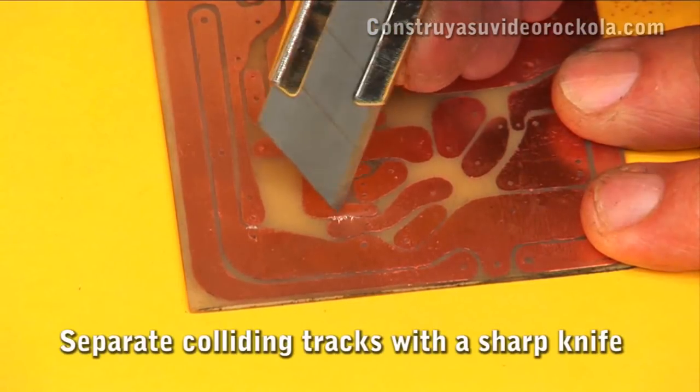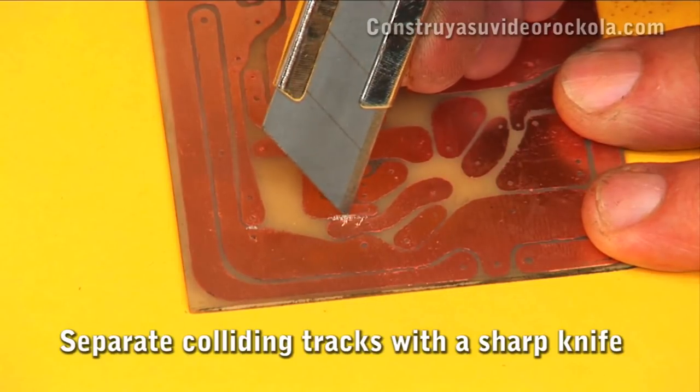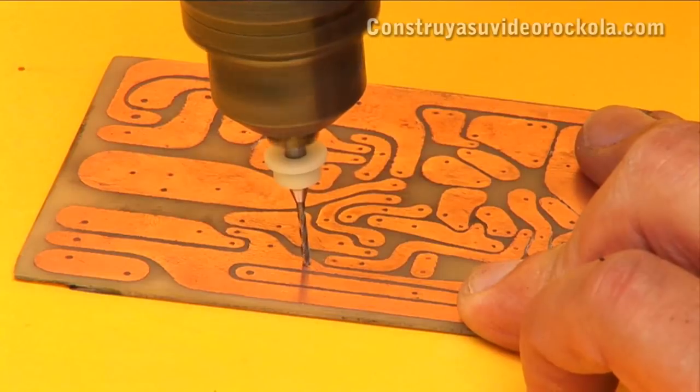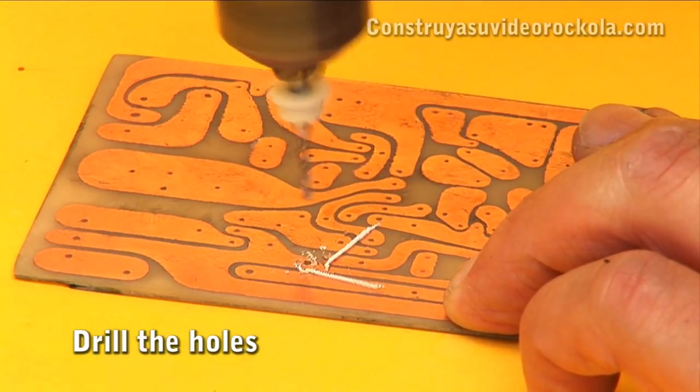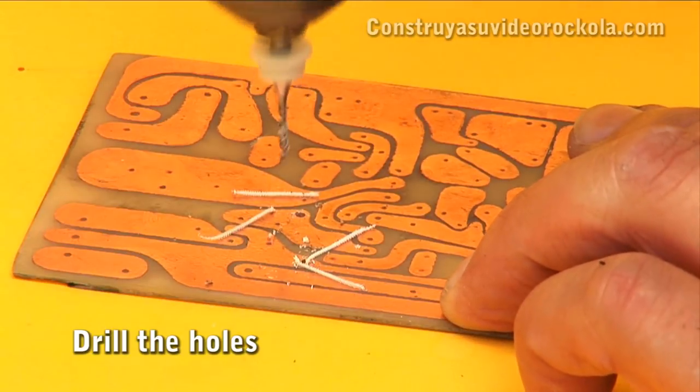If for some reason tracks are colliding, separate them by removing the excess copper with a knife. Check the board against the light. Then drill all the holes where components are going to be embedded. Use the appropriate drill bit according to the thickness of the legs of each component.